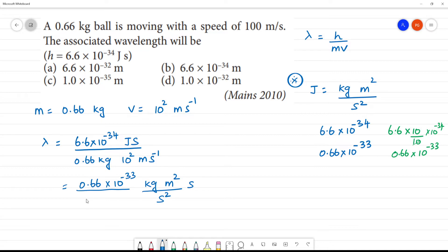I have 0.66 kg in the denominator, 10 square multiplied by 10 square meter second inverse. So 0.66, 0.66 kg cancel. Meter, the meter cancels.